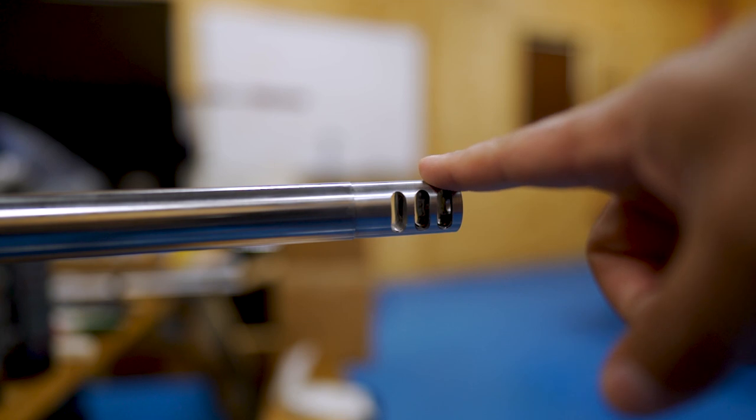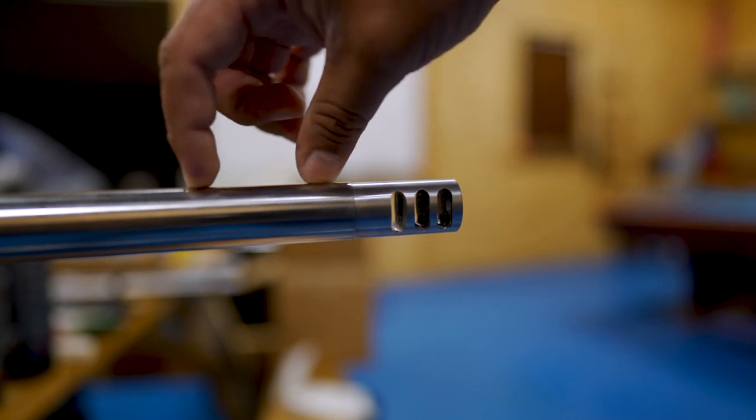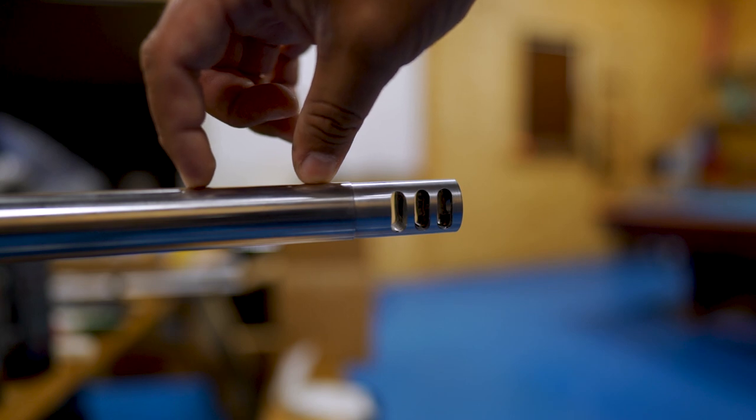All right, so your current setup looks something similar to this right now. The Easy Tuner actually attaches behind the muzzle brake. Let me show you how.